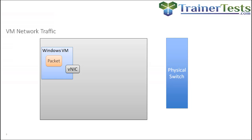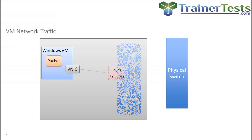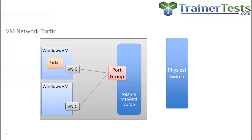When Windows needs to send some packets to the network it uses its virtual NIC. And what does a network interface card connect to? In most cases it connects to some sort of switch. Our virtual machines will connect to a virtual machine port group on a virtual switch. The port group is used to define settings like VLAN membership or security policies. And if other virtual machines are connected to the same port group as well, they can communicate with each other without that traffic ever leaving the ESXi host.